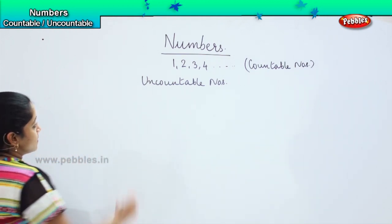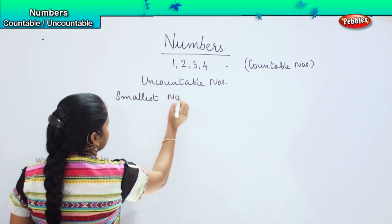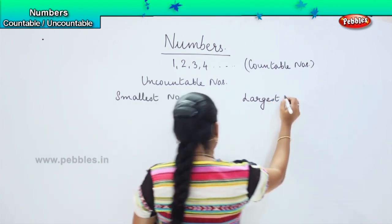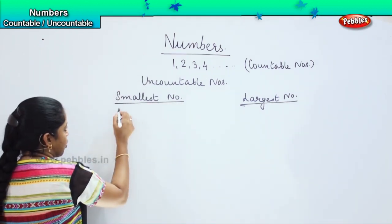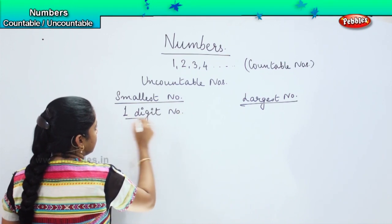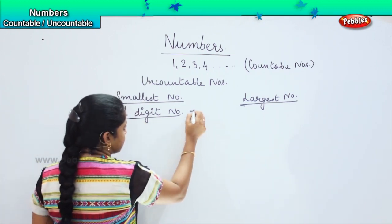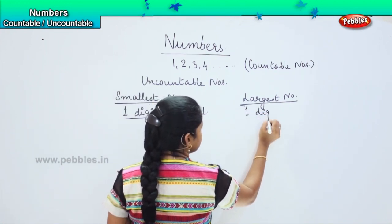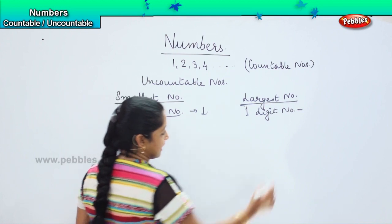The next thing which comes in our mind is the smallest number and the largest number. When I say smallest number — for example, if I say smallest one digit number — so what is my smallest one digit number, children? Yes, it is one. And what is my largest one digit number? Very good, it is nine.